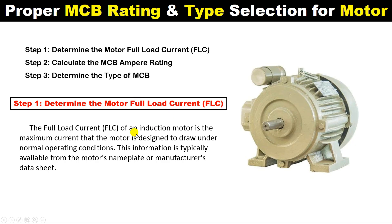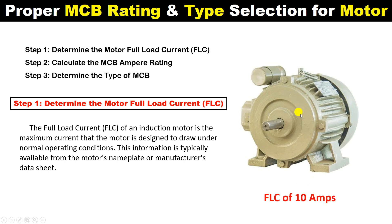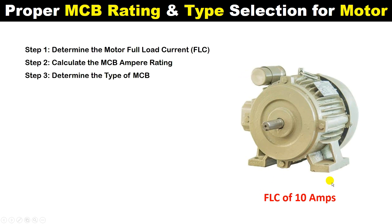For now, let us suppose that if we look at the datasheet of this motor, we get to know that the FLC of the motor is 10 ampere. This means 10 ampere current will flow when we run this motor connected with full load. Now through this current rating we have to find out the rating of the MCB.